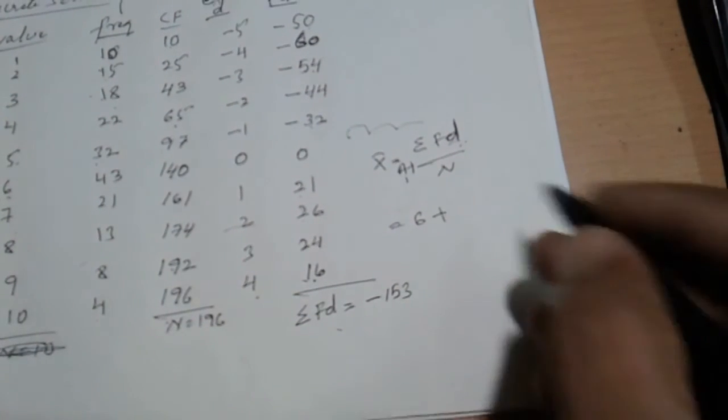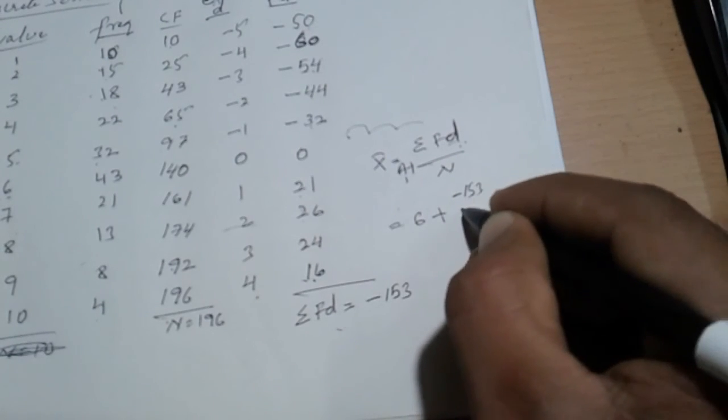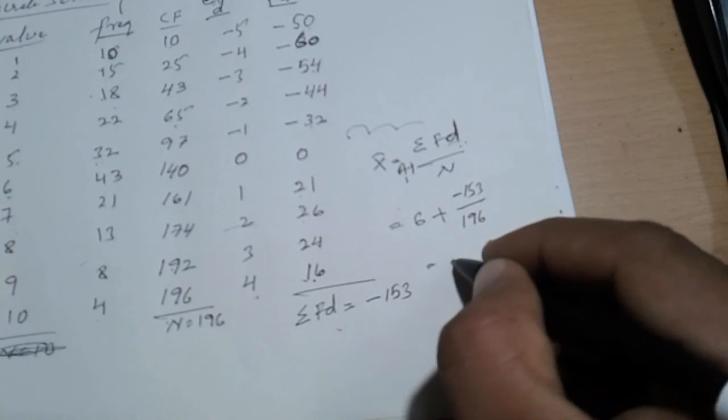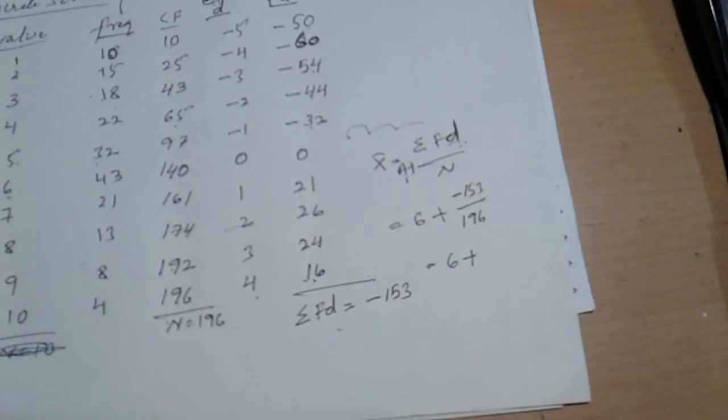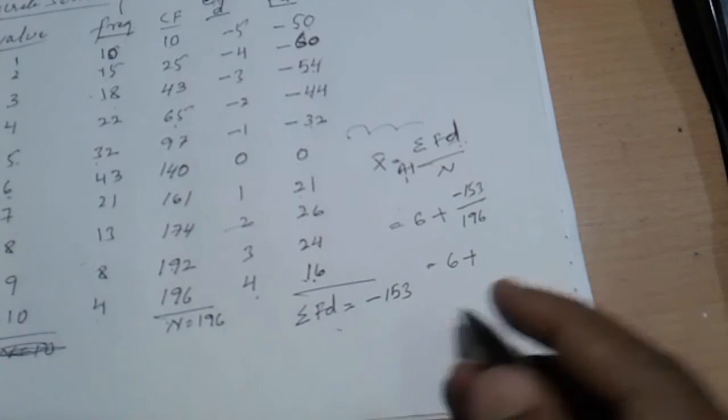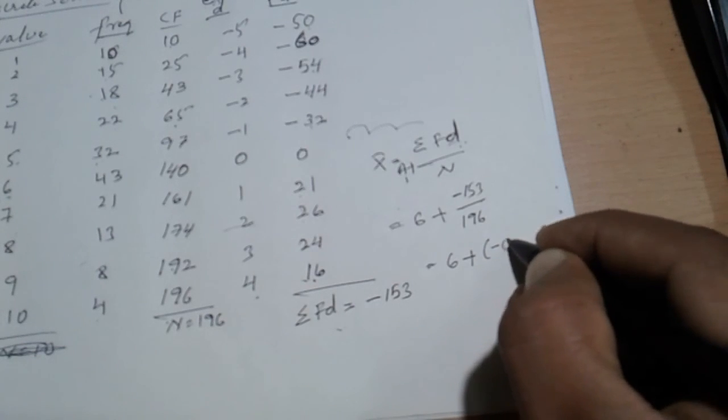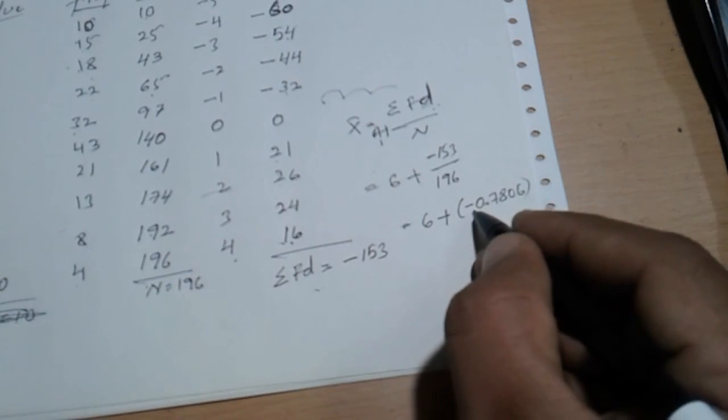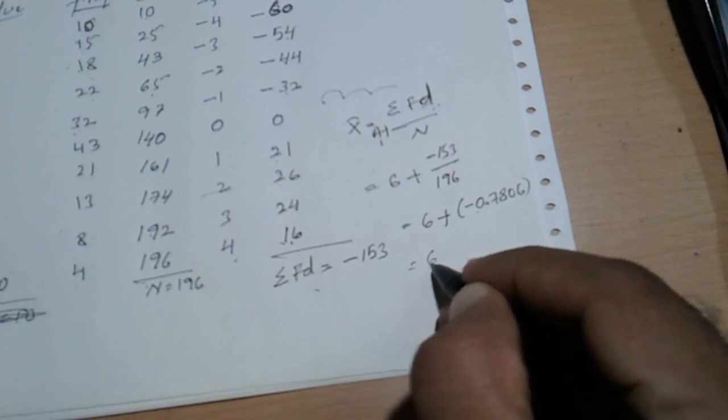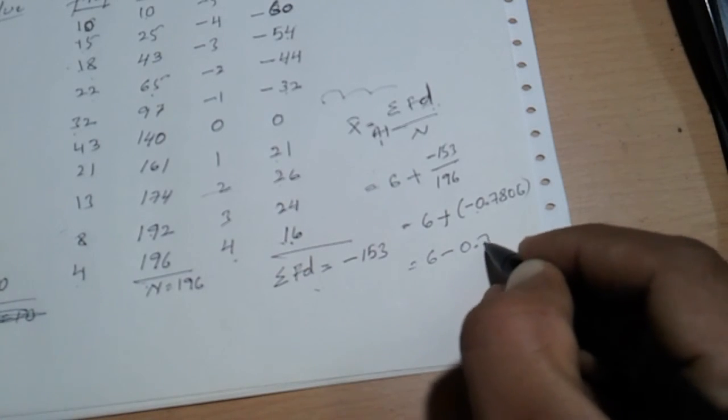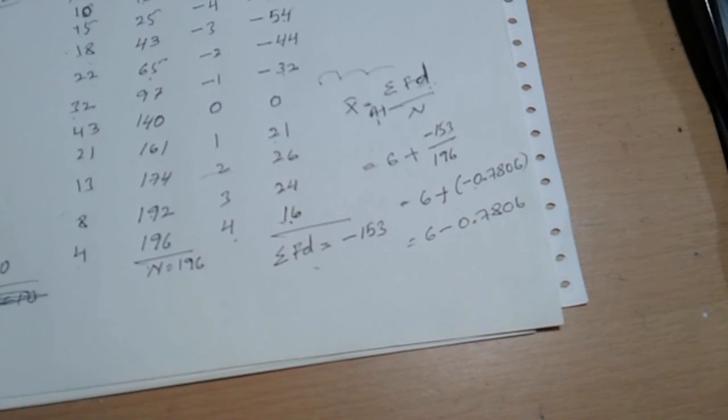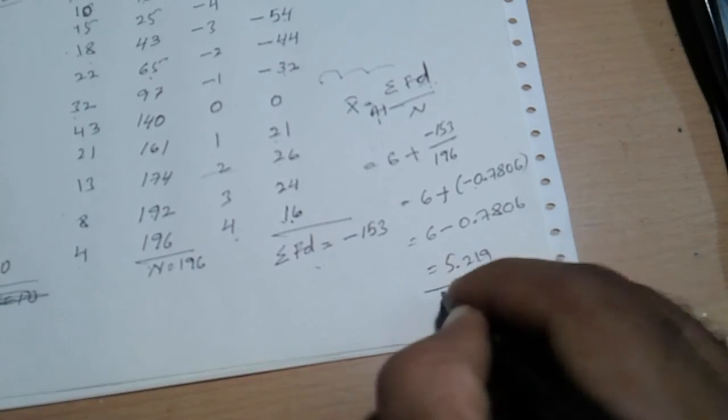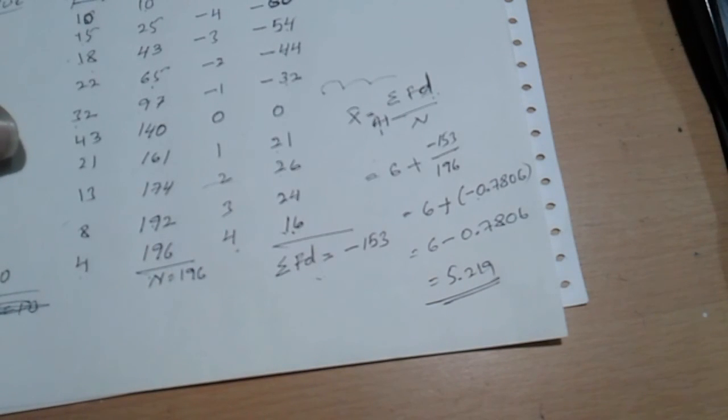So now add this into the formula. Minus 153 divided by overall 196. Then this 6 will be there. Plus 153 divided by 196. How much? This minus, minus 0.7806. Into bracket it is minus. So into minus, minus 0.7806. Now deduct this from 6. We will get 5.219. How much are we getting? 5.219.